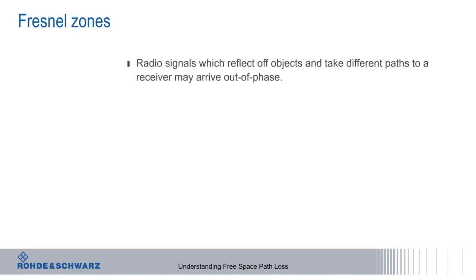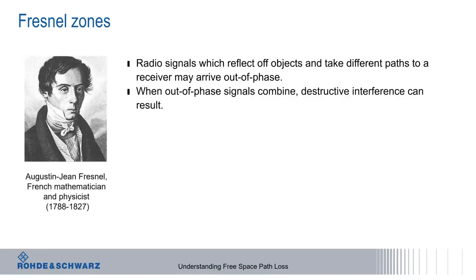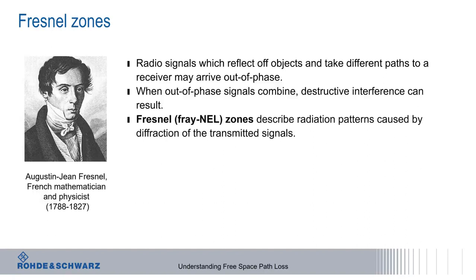The regions in which objects have the potential to cause interference are called Fresnel zones. If radio signals are reflected by objects, they may take different link paths to the receiver and thus arrive out of phase. Destructive interference can result when these out-of-phase signals combine at the receiver. Fresnel zones, named after Augustine Jean Fresnel, a French mathematician and physicist, describe the radiation patterns caused by transmitted signal diffraction.